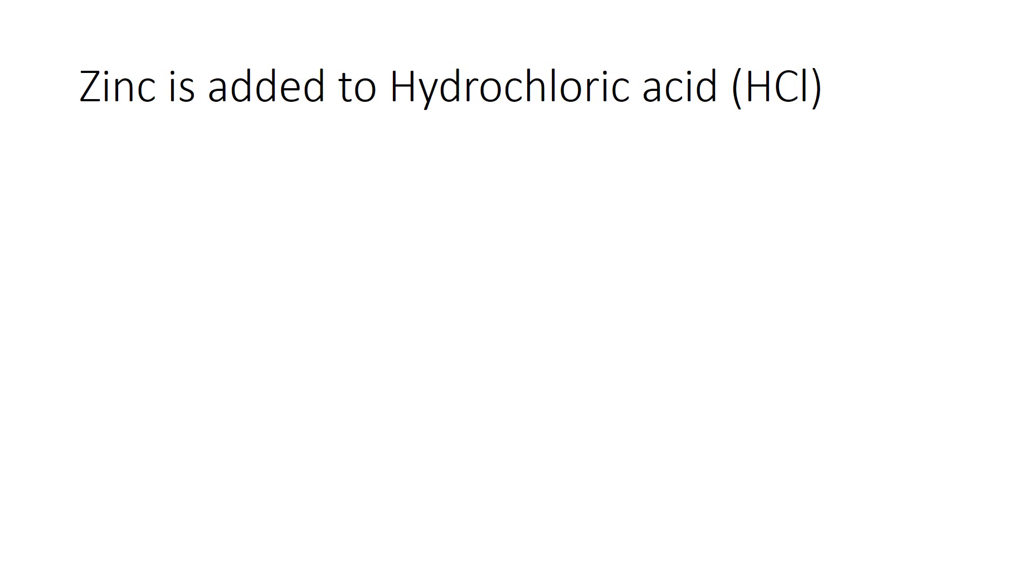In our next problem, we have zinc being added, which is a plus, to hydrochloric acid, and we are given the formula for that. So let's write out our reactants, predict the type of product, and then figure out what the products are. Zinc is a metal and it can stand alone, so we don't put any subscript, we don't worry about charges. Is added is a plus sign to hydrochloric acid, and we are given the formula for that, which is HCl.